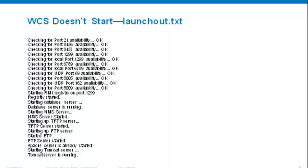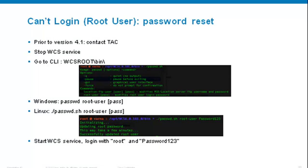If you can't log in as root and would like to do a password reset: if you're using a WCS version older than 4.1, contact TAC. For later versions, stop WCS, then go to the bin folder and run the passwd shell or passwd.bat utility with the command: passwd root-user [your-password]. After it runs, start WCS back and log in with root and your new password.